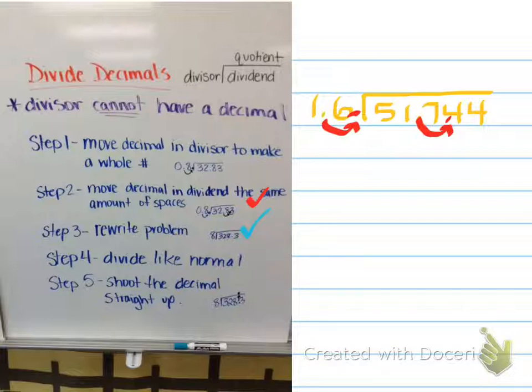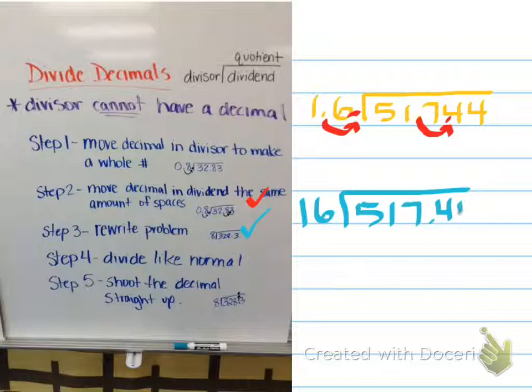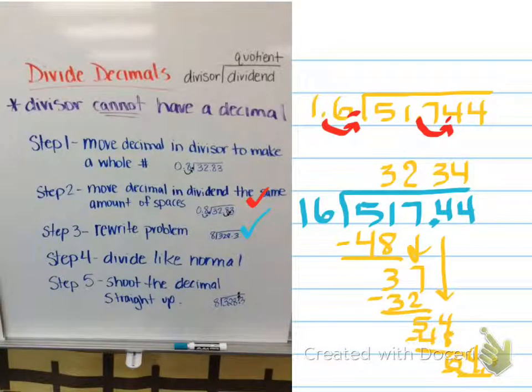And so now step number three is where we're at now. And it says let's rewrite it because this is crazy looking the way it is. So how about we rewrite it where we've got our whole number on the outside. So now we know what we're dealing with. And we've got our decimal moved over one on the inside. We always have to make sure we do both ways. Now we're going to divide like normal. So this is as if we're dividing a decimal by a whole number now. So we're just dividing like normal. Okay. So here's my math. So I came up with 3234 as my answer, but I'm not finished yet because now I need to do my shoot the decimal straight up.